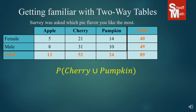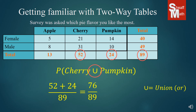Now we have a new notation — a new symbol — and it's the U. We call this the union. What this is asking is: what is the probability of you asking somebody who likes cherry pie or somebody who likes pumpkin pie? We are going to find the probability of cherry or pumpkin out of the total, adding those two together. We have 52 plus 24, which makes 76 out of the total who liked cherry or pumpkin. That's our chance of picking a cherry pie or pumpkin pie lover.